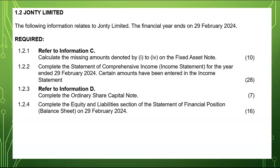For the fixed asset note, I'm already imagining it: I might have equipment and vehicles. The first row will be carrying value at the beginning of the year — cost minus accumulated depreciation. Under movements, there are three things: additions at cost, disposals at carrying value, and depreciation. The bottom part mirrors the top: carrying value at the end of the year, cost, and accumulated depreciation.